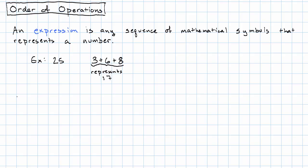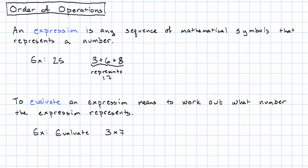So the word expression refers to sequences of mathematical symbols like this. Later on we're going to encounter some more complicated sorts of expressions. To evaluate an expression means to work out what number the expression represents. So for example, to evaluate the expression 3 times 7, we just work out that 3 times 7 equals 21.